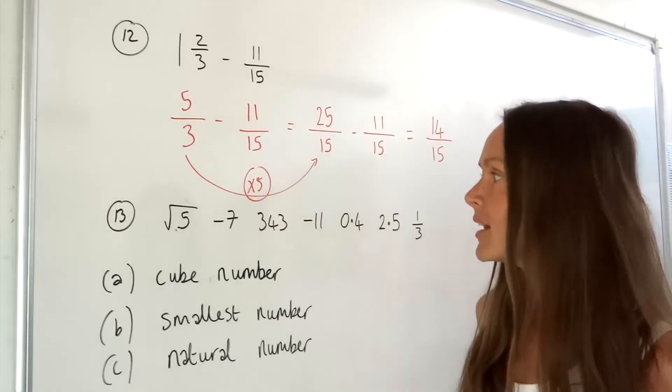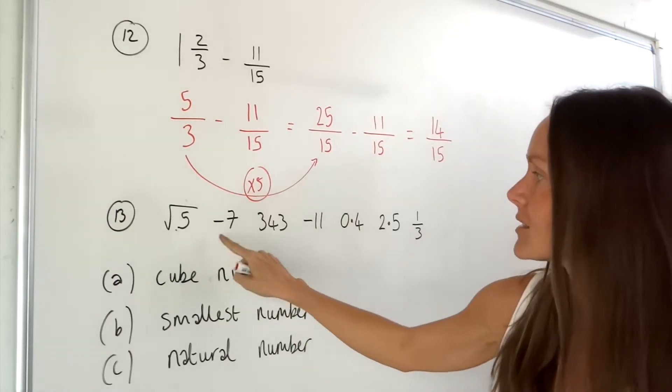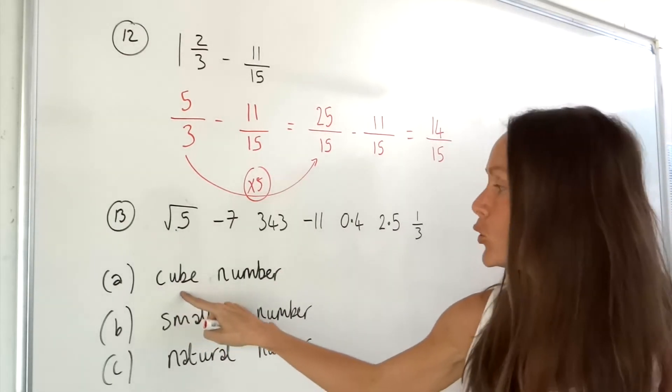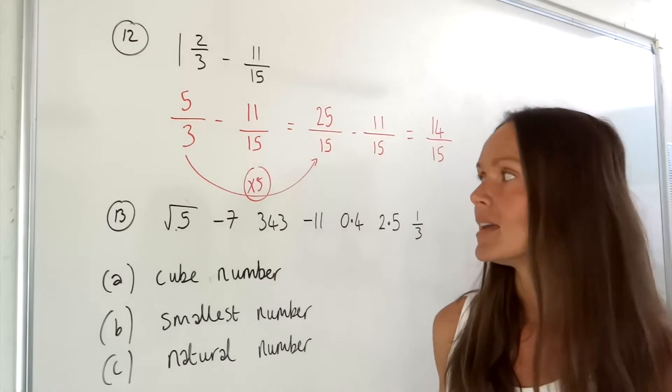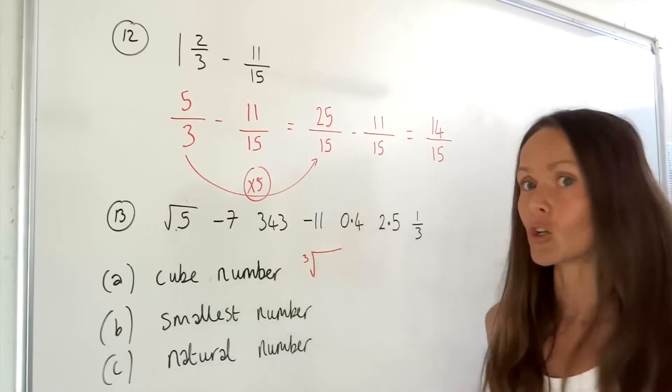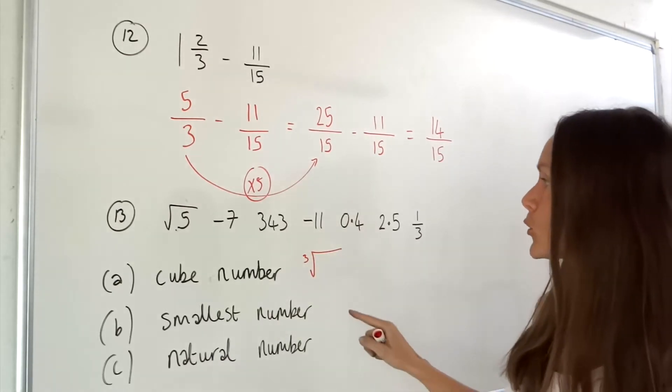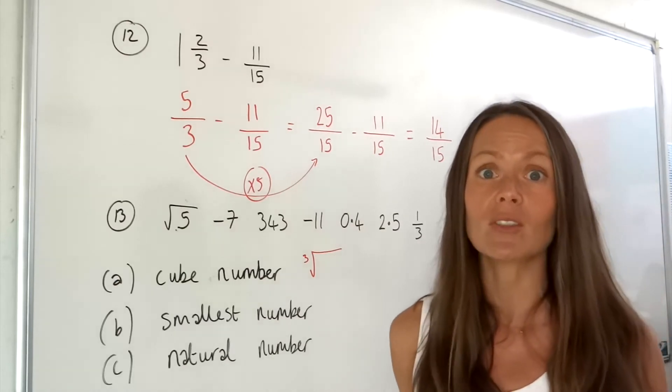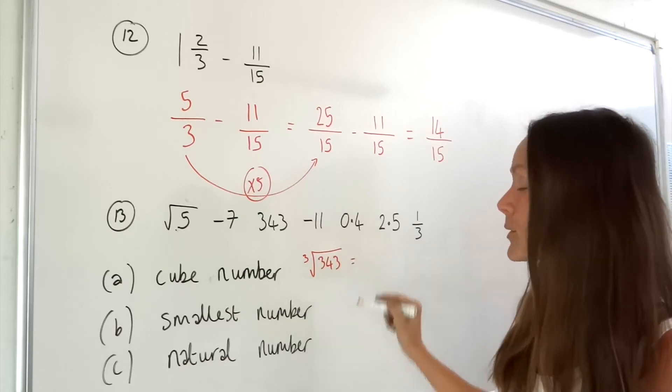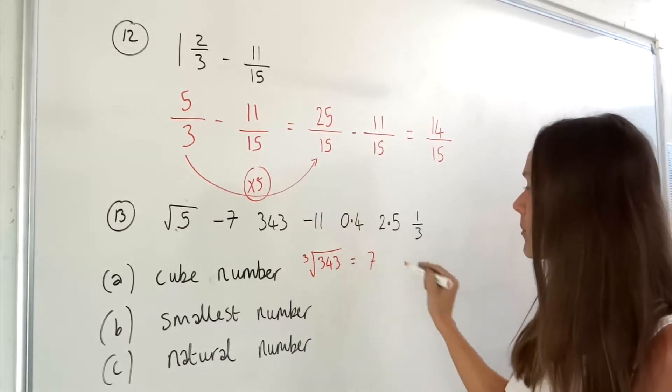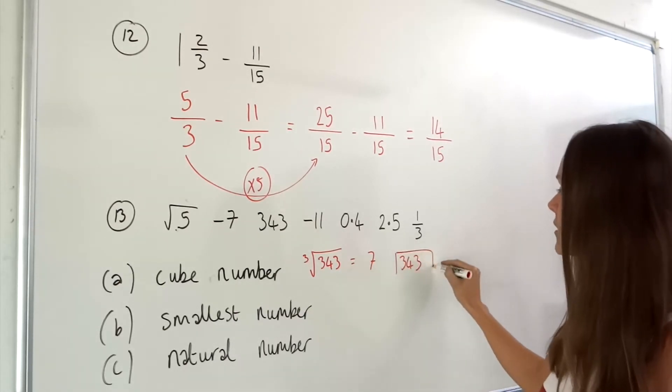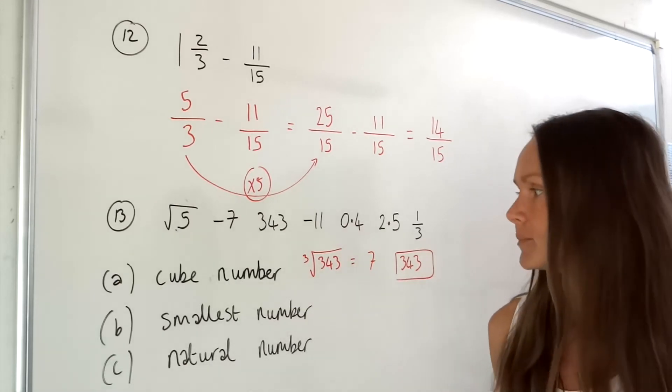Number 13, they've given us a list of different numbers and from this list we first have to pick out a cube number. A cube number is a number that we can cube root. The cube root symbol on the calculator looks like that. When you cube root the number it should give you a positive integer like a whole number. If we cube root 343 in the calculator it gives us the number 7, that means 343 is a cube number.